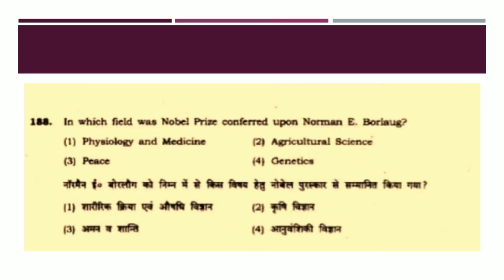The next question: In which field was the Nobel Prize conferred upon Norman E. Borlaug? The options are: Physiology and medicine, Agriculture science, Peace, or Genetics. The right answer is Option number three: Peace. Norman E. Borlaug was awarded the Nobel Prize for Peace.